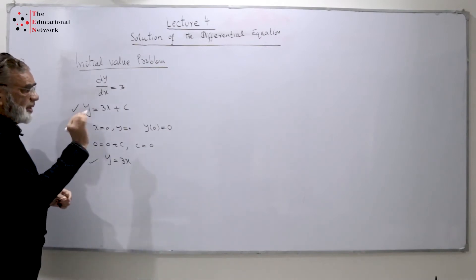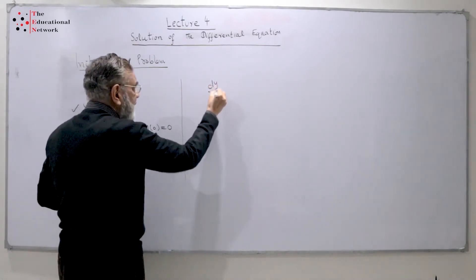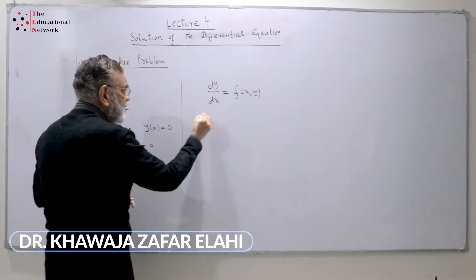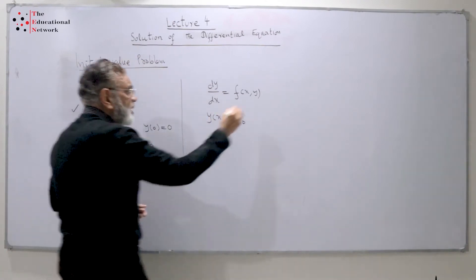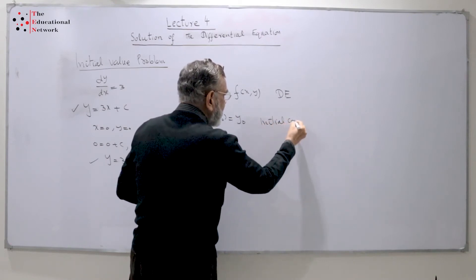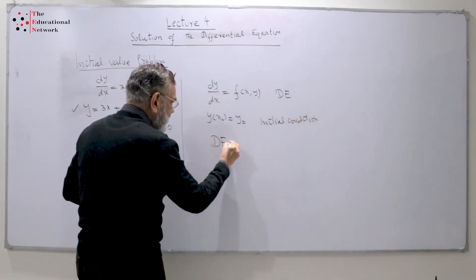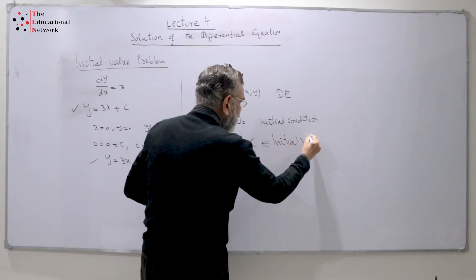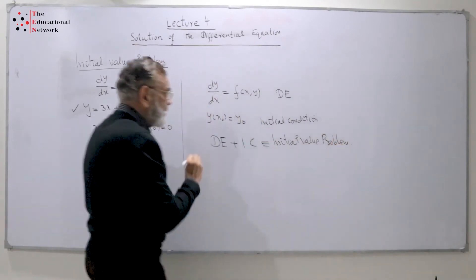Now there are two key points. The general differential equation is any function relation of x and y. When we have the condition y at x = 0 equals y₀, we call it the initial condition. When we combine a differential equation plus an initial condition, we call it an initial value problem. This is a very important notation.